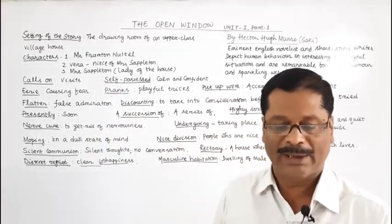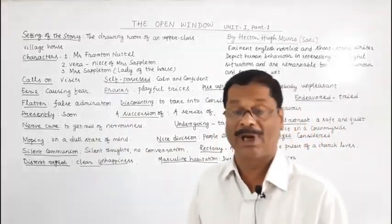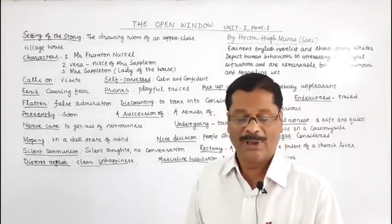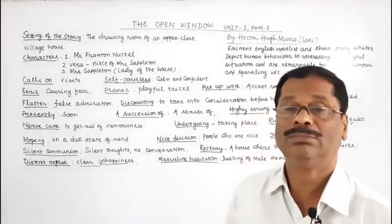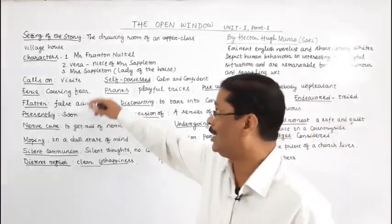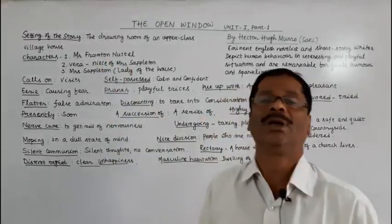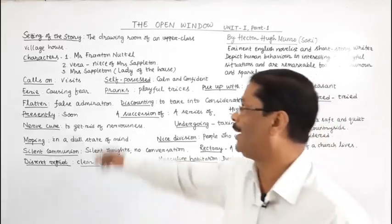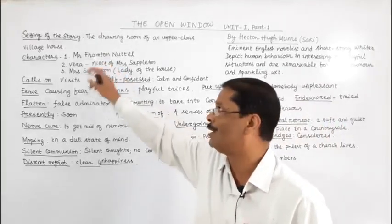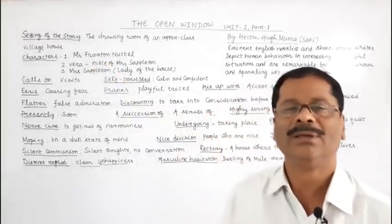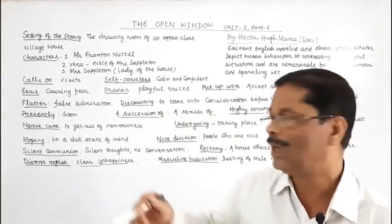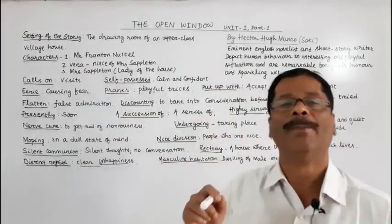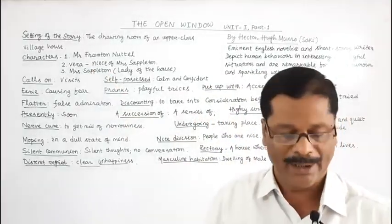'Then you know practically nothing about my aunt,' continued the self-possessed young lady. The caller — Mr. Framton Norton — admitted, confessed, that he knew the aunt of Vera only by her name and address. 'Only her name and address,' admitted the caller.